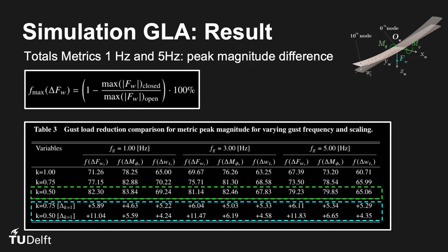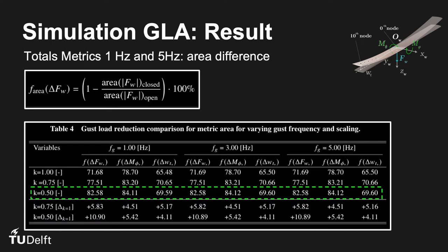This confirms the hypothesis that faster actuators are more effective at load reductions. Furthermore, we can observe that shear force yields a better reduction than tip deflections. The shear force operates at a faster timescale compared to tip deflections, since it is directly related to linear acceleration. This confirms the second hypothesis that the reduction is effective for higher-frequency objectives. For the area metric, similar observations are made.